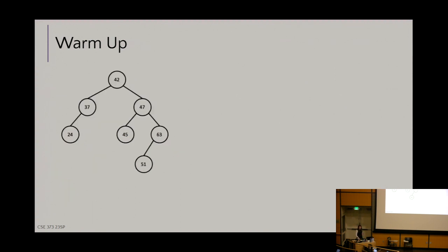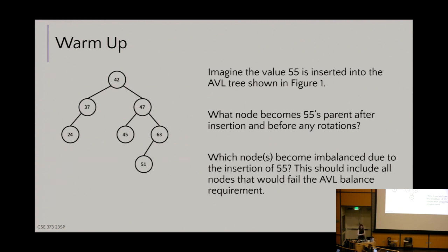Here is another AVL tree — imagine the value 55 is inserted. Taking a quick look at this, who becomes 55's parent after insertion and before any rotations? Where does it get popped in initially, just following BST structure? The answer is 51, and it goes to the right of 51.